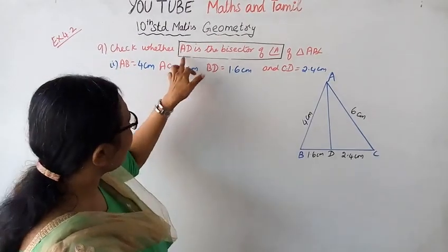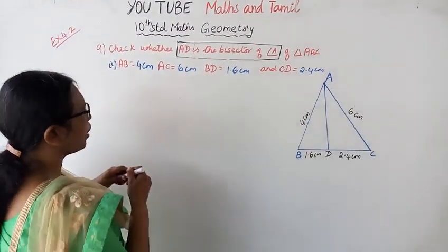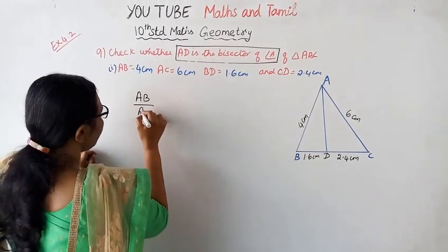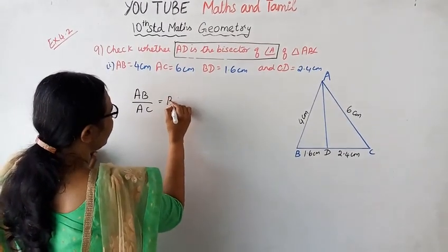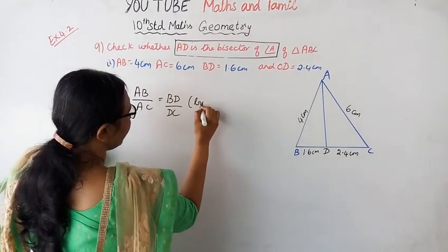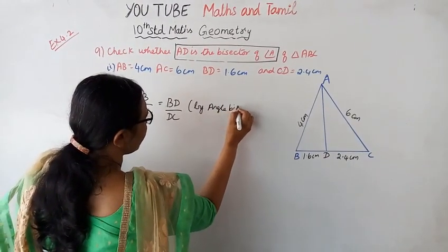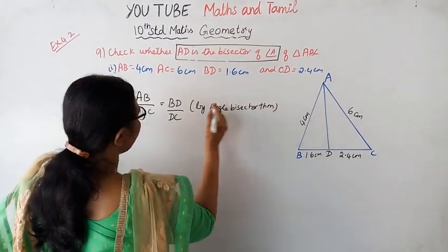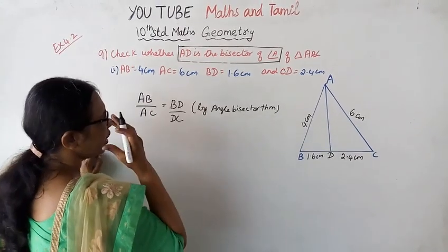Check whether AD is the bisector of angle A. By the angle bisector theorem, AB by AC equals BD by DC. That is, if AD is the bisector of angle A, then AB by AC equals BD by DC.